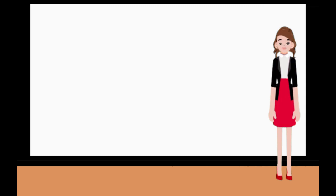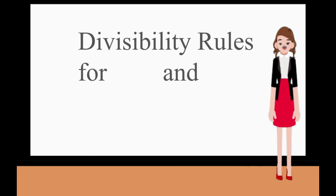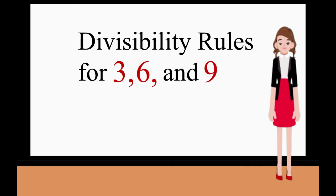In our last session, we talked about the Divisibility Rule of 2, 5, and 10, and how to find the common factors. Today, we will discuss the Divisibility Rule of 3, 6, and 9, and how to find the common factors.